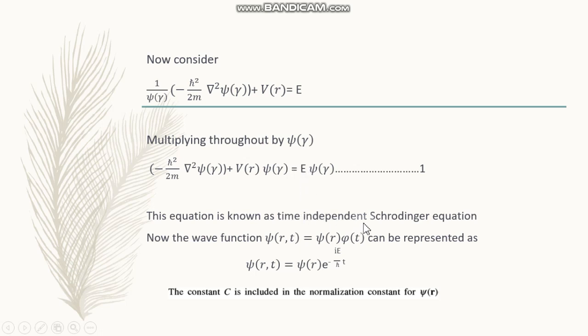The solution of this equation can be represented as psi of r,t is equal to psi of r phi of t, which can be represented as psi of r times e raised to minus i E by h-cross into t. So combining the space part and time part we obtain psi of r,t like this.